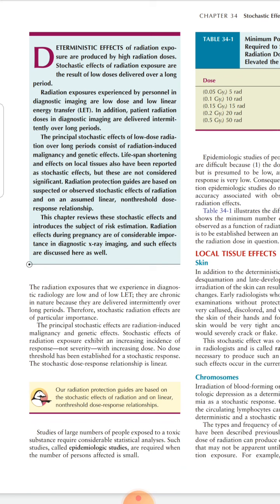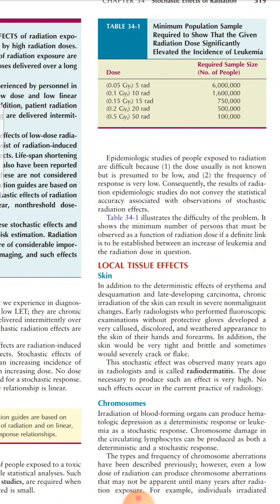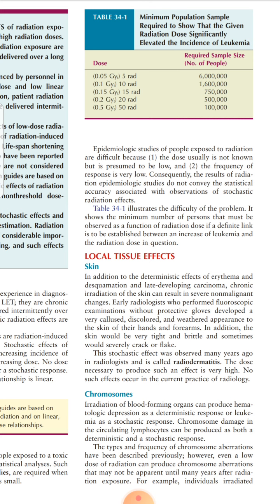Studies of large numbers of people exposed to a toxic substance require considerable statistical analysis; such studies are called epidemiological studies, and they require a number of persons affected. That number would be small, and we cannot conduct these studies in people exposed to radiation. The first reason is that the dose is usually not known and is presumed to be low, and the second is that the frequency of response is very low. So the results would not be authentic, and we do not want false conclusions.